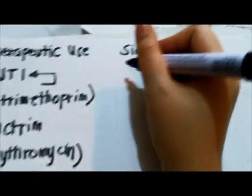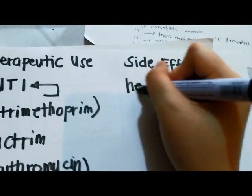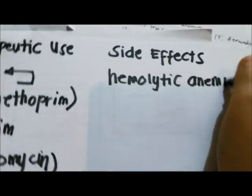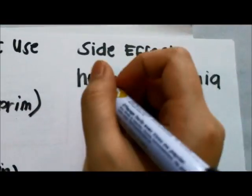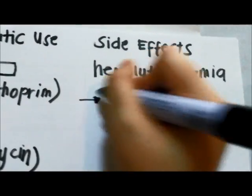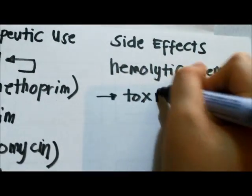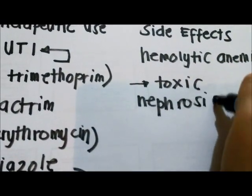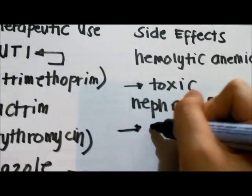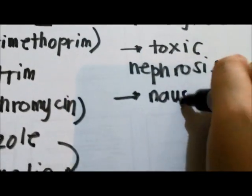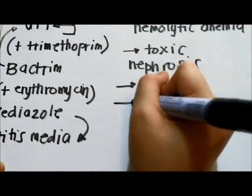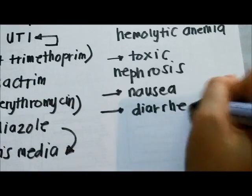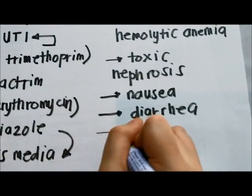The side effects of sulfonamides are significant. Side effects include hemolytic anemia, toxic nephrosis, as well as nausea, diarrhea, headache, and dermatitis.